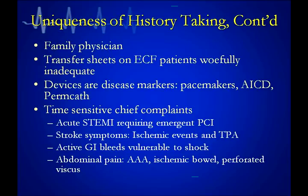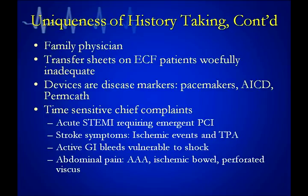Look for pacemakers, defibrillators, permcaths, and PICC lines — in the elderly patient these are true markers of significant disease. Always remember there are many time-sensitive chief complaints in geriatric patients: acute STEMI patients with emergent PCI must move fast; stroke and ischemic events are time-sensitive, though we're out to 4½ hours now. Geriatric patients with GI bleeds do not tolerate blood loss well and are vulnerable to shock. And abdominal pain hides all the bad things: ruptured AAAs, ischemic bowel, perforated viscus — all very serious conditions.